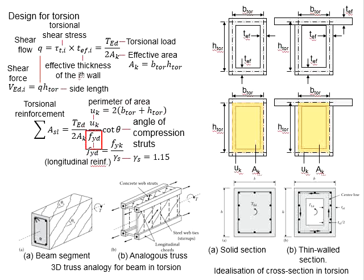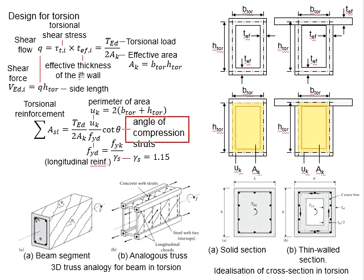F_yd is the design yield strength of the steel bar used for torsion reinforcement. It is defined by the specified yield strength of the steel bar divided by a factor of safety of 1.15. The angle in the equation refers to the angle of the compression strut.